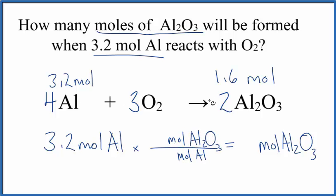Now we use the coefficients. This is the only time we really use the coefficients with stoichiometry. We have two moles of aluminum oxide for every four moles of aluminum. We multiply. Moles of aluminum on top and bottom cancel out.